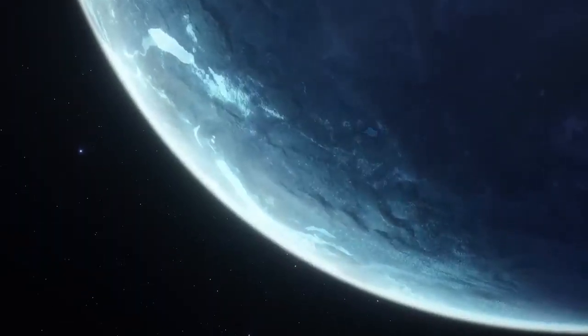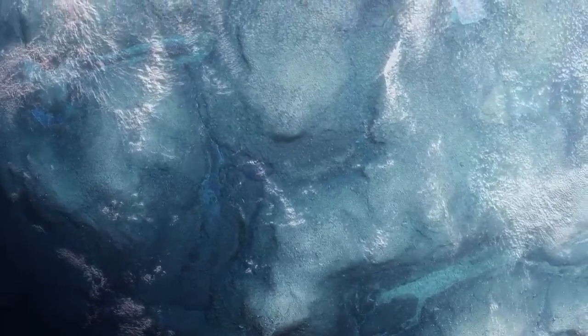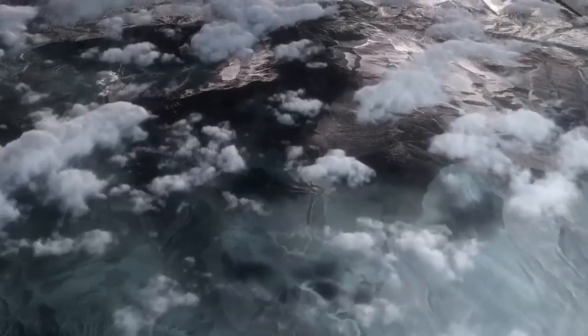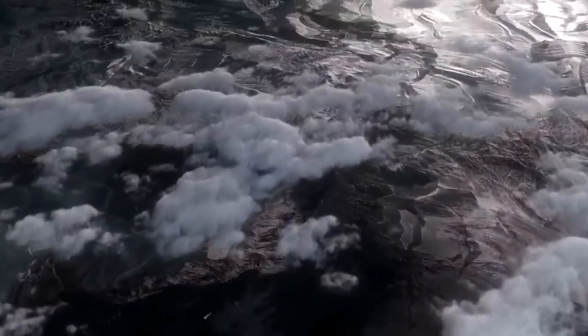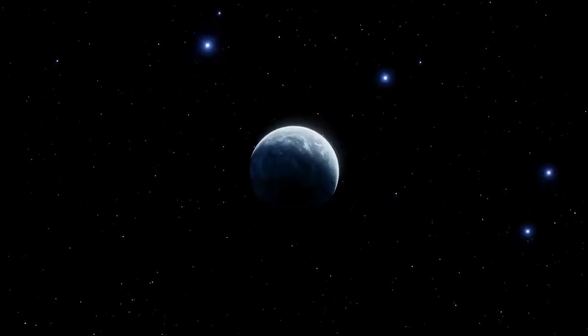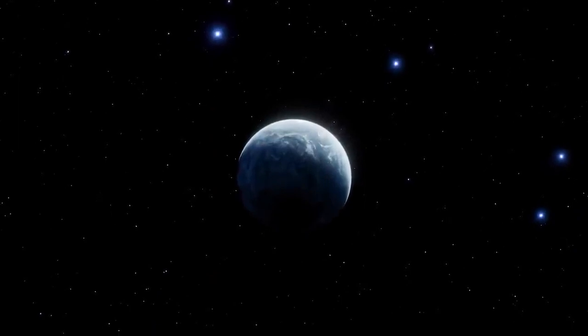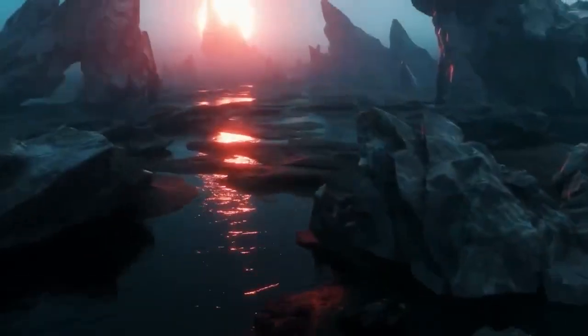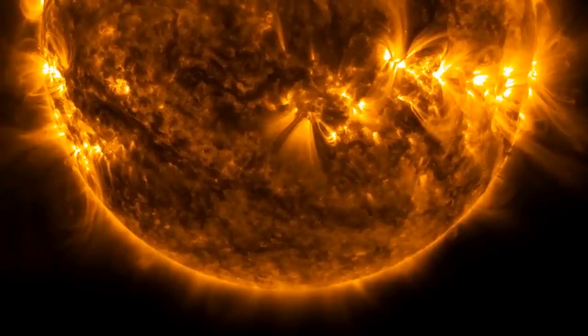Despite the potential for liquid water on Proxima b, the planet is not considered to be particularly hospitable to life. It is most likely tidally locked, meaning it always faces the same direction towards its star, resulting in permanent day and night cycles with significant temperature changes. The planet also receives 100 times more high energy radiation than Earth because of its proximity to Proxima Centauri, including X-rays and ultraviolet light.